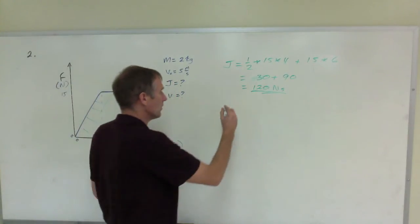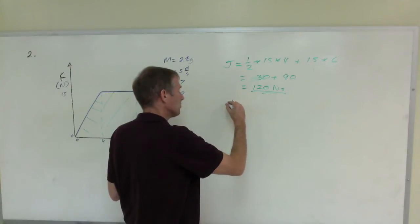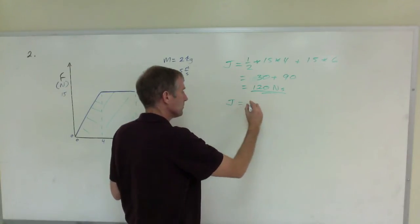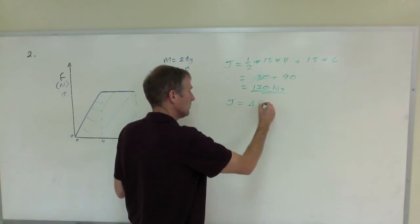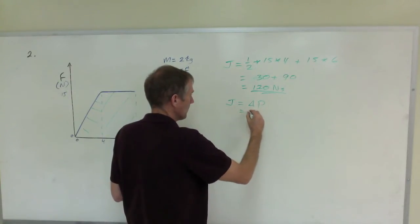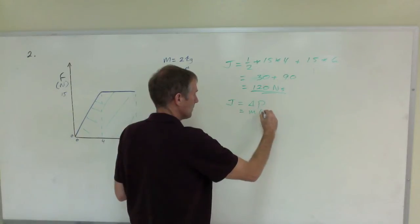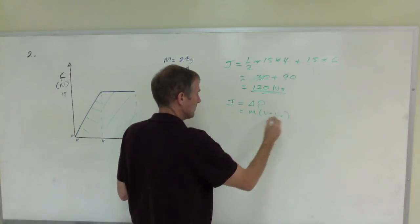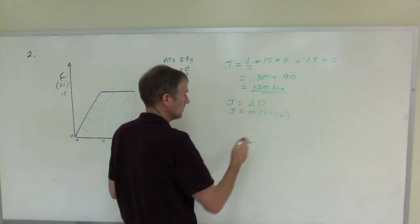To find the velocity, the impulse momentum theorem says that impulse causes a change in momentum, which is going to be the mass times the final minus the initial velocity. So J equals m times delta V.